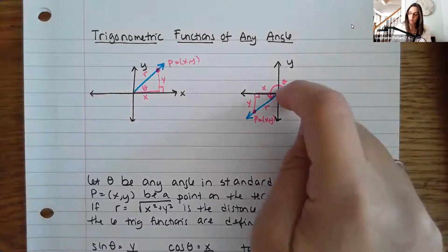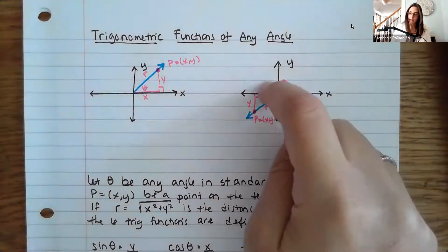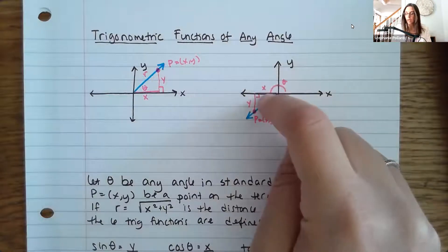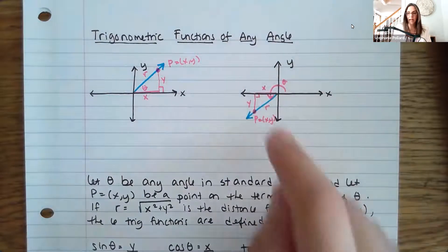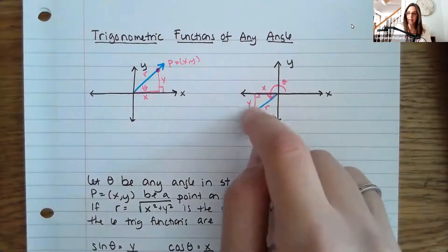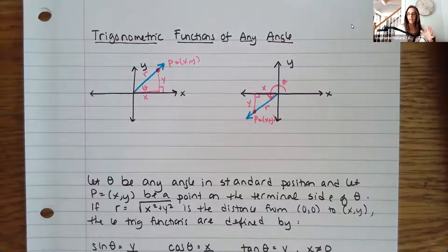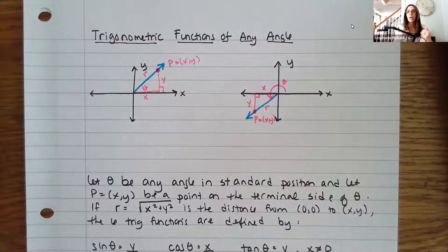Here you have an angle that goes all the way around into quadrant three, so it's over 180 degrees. You can see you still have this little triangle idea, although it's a little bit different, because you are in the negative part of the graph here, so that does get incorporated. But we can apply very similar ratios that we did in the last section.